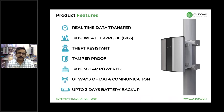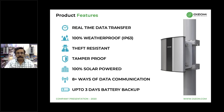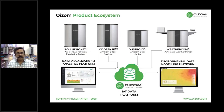Our products are empowered with features like real-time data transfer, all-weatherproof enclosure with IP63 certification, theft resistance, tamper and vandalism proof design, full solar power compatibility, more than eight different communication methods, and a battery backup lasting more than 72 hours. Our flagship products are: the ambient air pollution monitoring system (Pollutron), ambient odor analyzer (OdorSense), ambient dust monitor (DustRod), and automatic weather station (WeatherPump) — all connected to our OISOM IoT data platform.